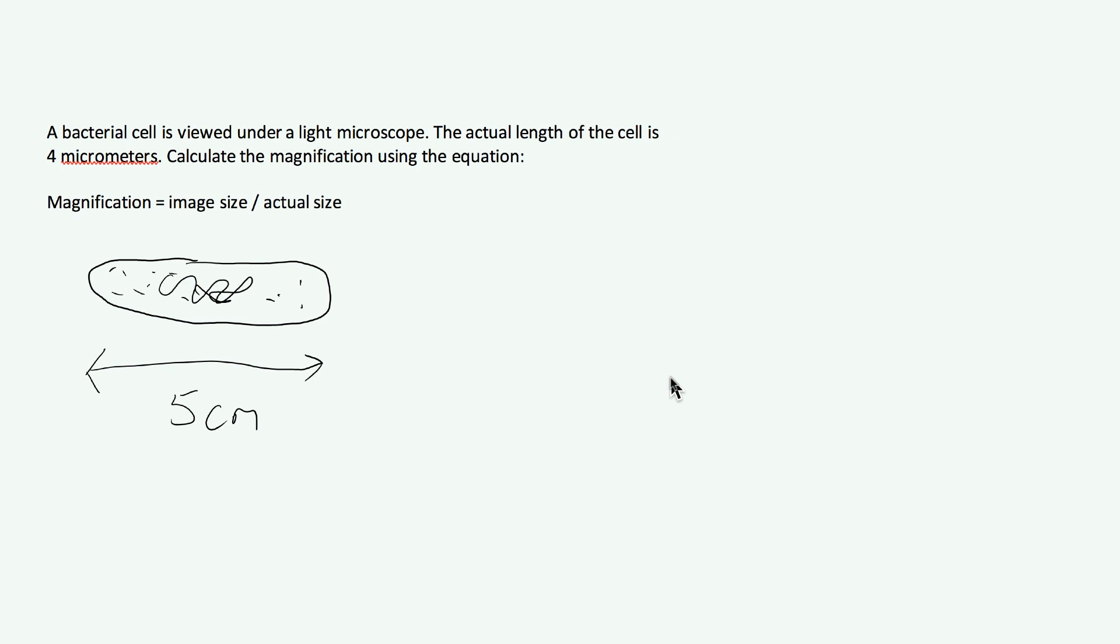So let's dive straight in. It says a bacterial cell is viewed under a light microscope. The actual length of the cell is 4 micrometers. Calculate the magnification using the following equation. And that is magnification equals image size over actual size.